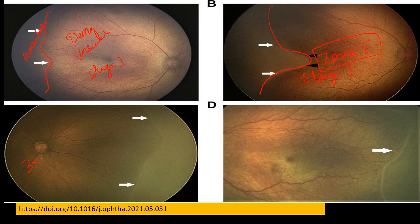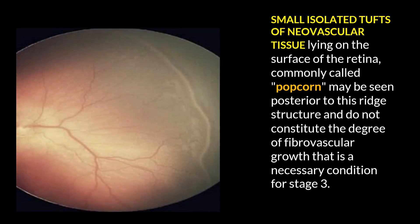In the third picture, the line is not as thin as seen in stage one — it has a certain height as well, so this is stage two ROP with a ridge. Similarly, the fourth picture also shows a raised line, which is stage two ROP with a presence of a ridge. You can also see small condensations here.